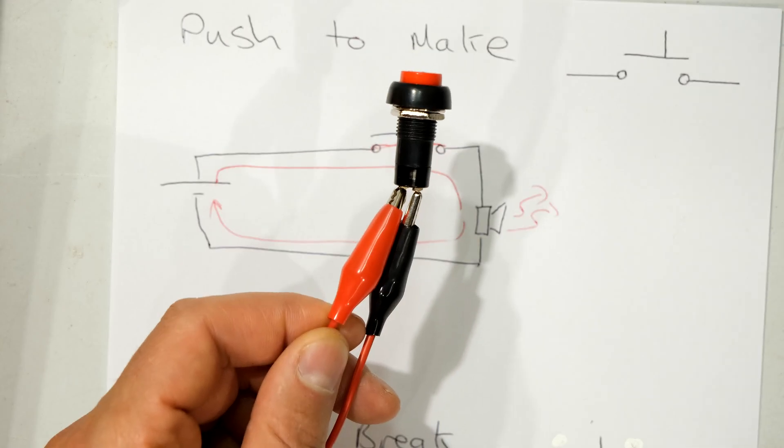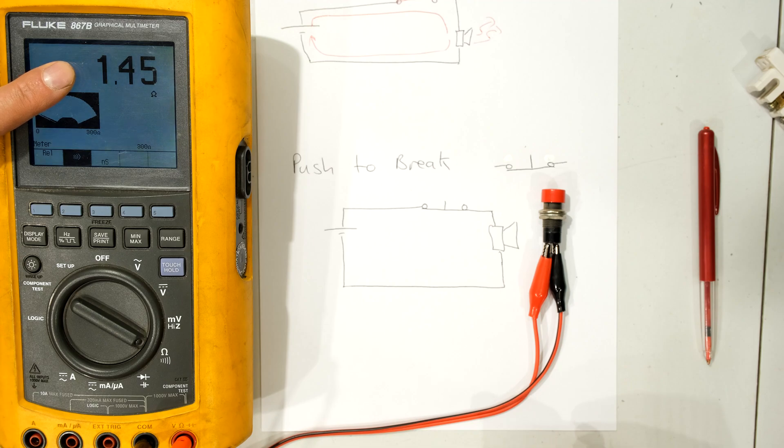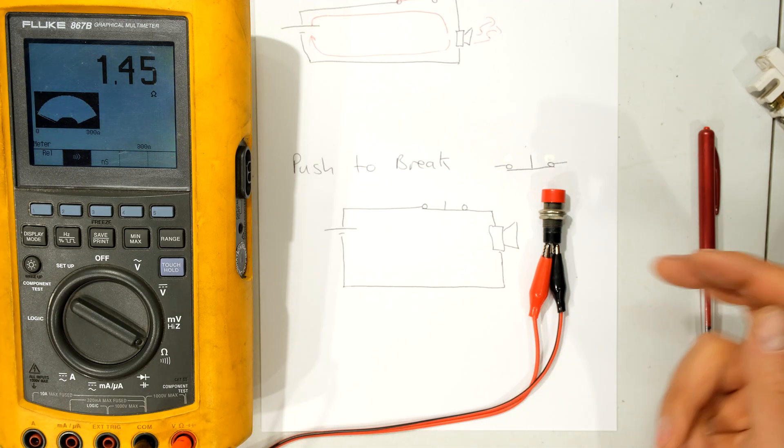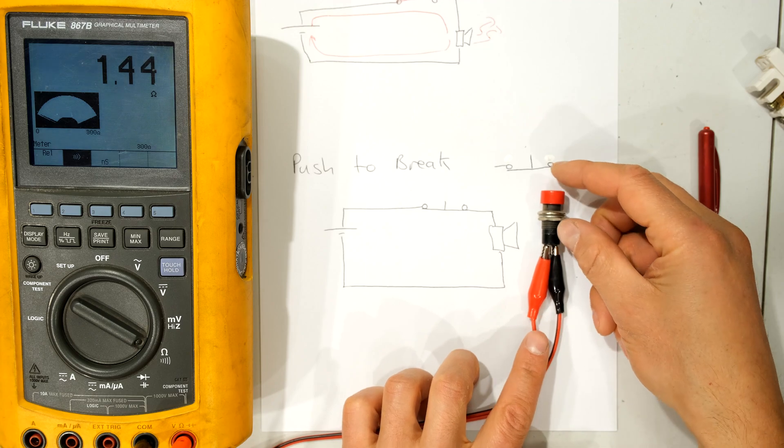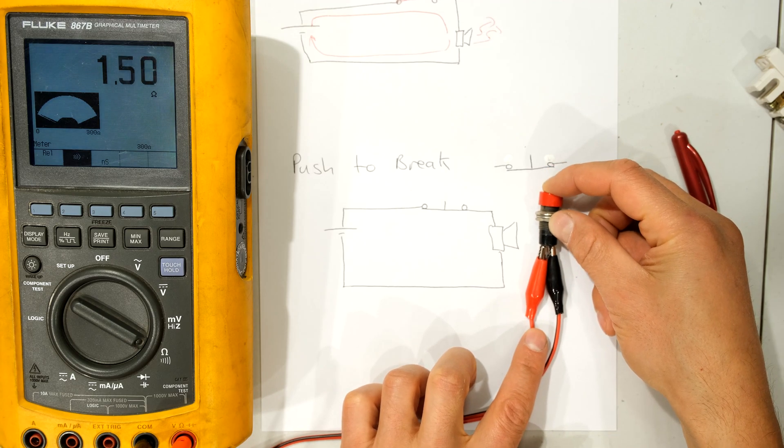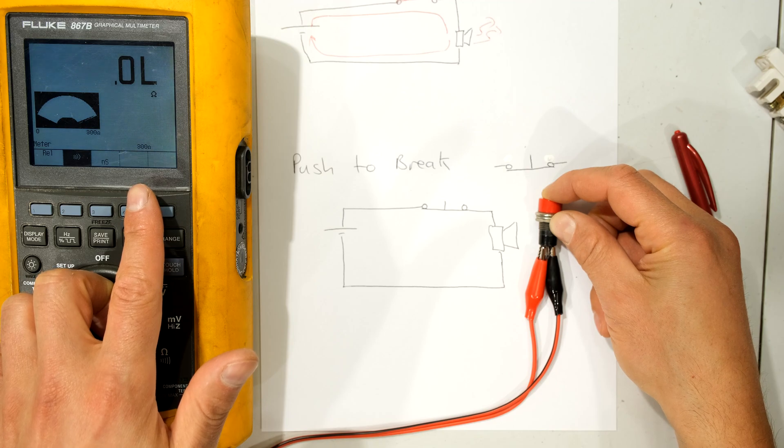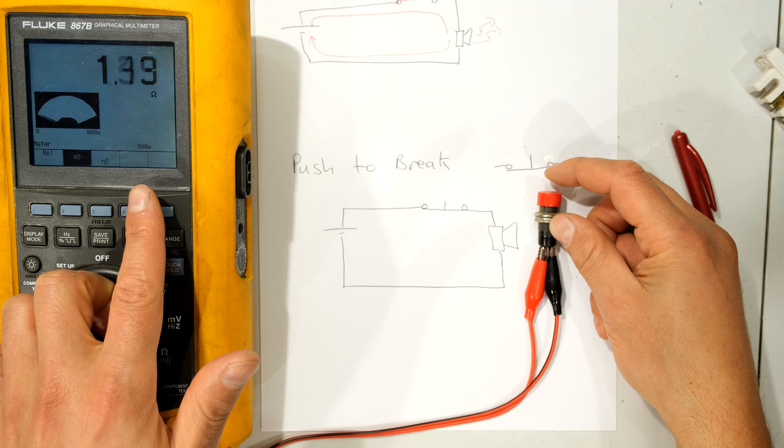Right, let's have a look at the push to break. Right, now I have the meter here already and you can see it says 1.45 ohms and you should be hearing that buzzing. Why? Because the switch in its resting position is already a closed circuit. So in order for me to open the circuit, I need to depress the switch. See the meter is now showing an open circuit. Closed circuit, open. Closed, open.